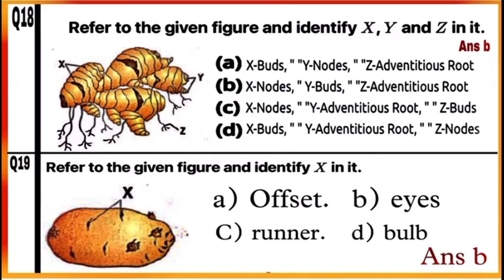Question 19: Refer to the given figure and identify X in it. The given figure is a modified stem of potato called a tuber, where X represents eyes or buds. So mark B as the correct answer.